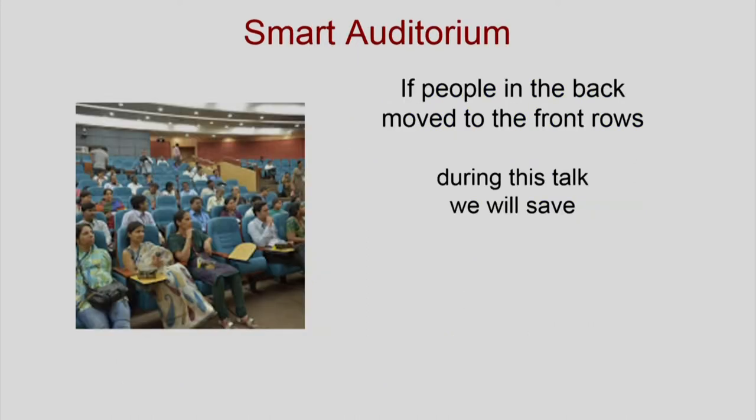Let us take one example. Suppose I call an auditorium 'smart' — and I am going to use this example in the rest of my talk to illustrate what it is that computer scientists can do to make things smarter, and in the process also understand how humans can become smarter by doing the same sorts of things that we provide to smart artifacts. Let us understand what a smart auditorium might do and use that as an example to illustrate other smart devices and smart artifacts, including humans.